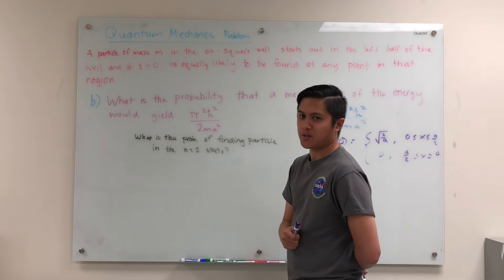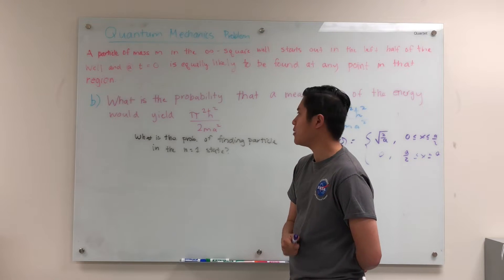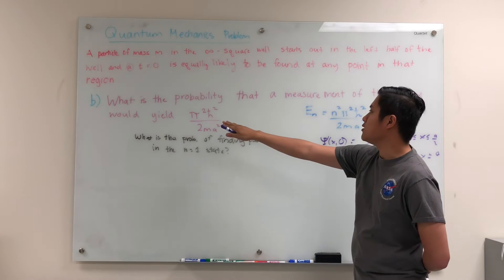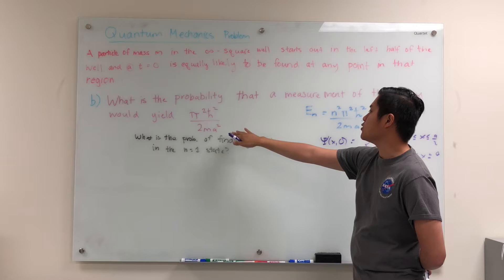Hello there, my fellow intellectuals. Welcome back to part B of this quantum mechanics problem. The problem asks, what is the probability that a measurement of the energy would yield pi squared h-bar squared over 2ma squared?